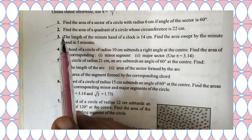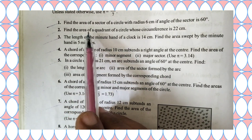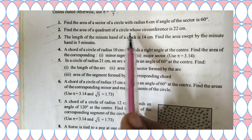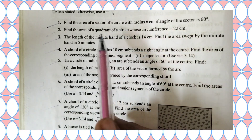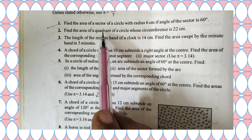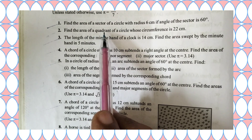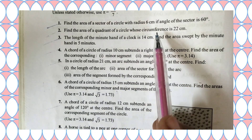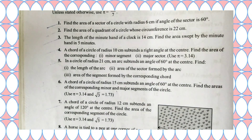Now let us move to the second question. Find the area of a quadrant of a circle whose circumference is 22 centimeter. We have to find out the area of a quadrant. A quadrant is one quarter of a circle.